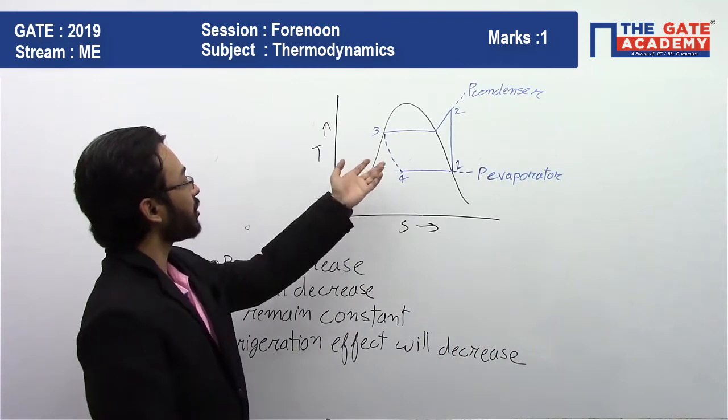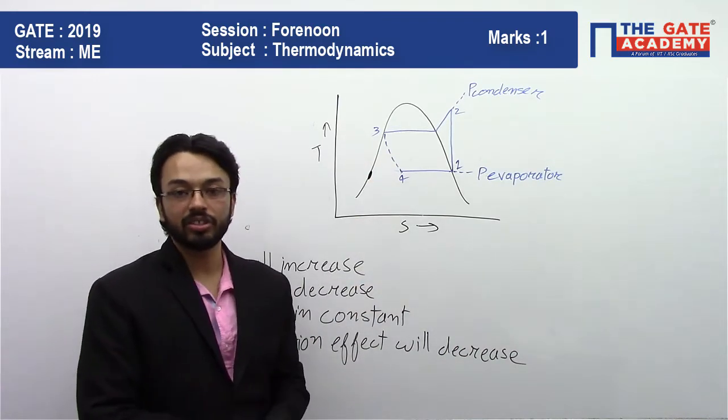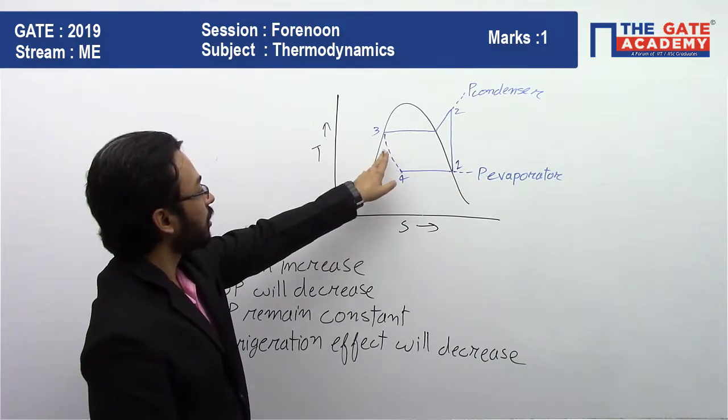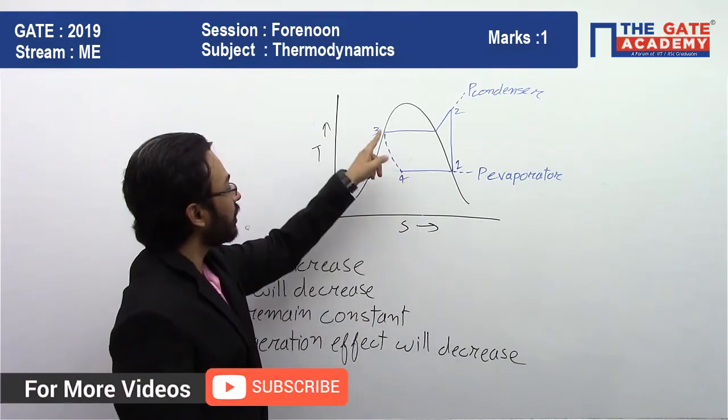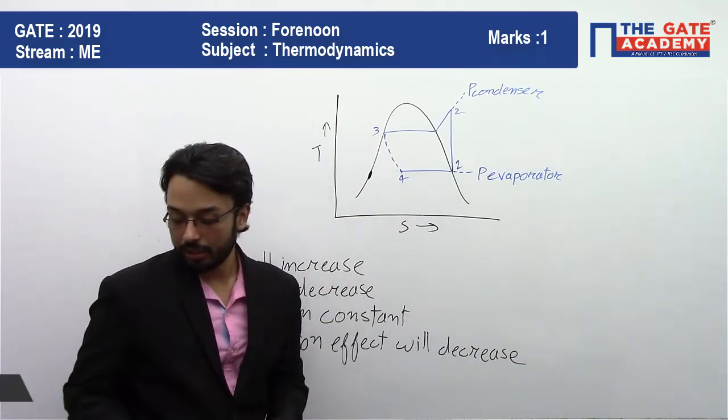As you can see, this is the ideal vapor compression cycle. Now see, instead of throttling process, they were asking what if we do this expansion reversibly adiabatically? So let us see what happens.